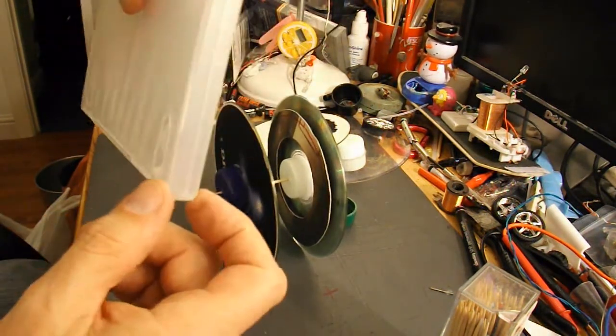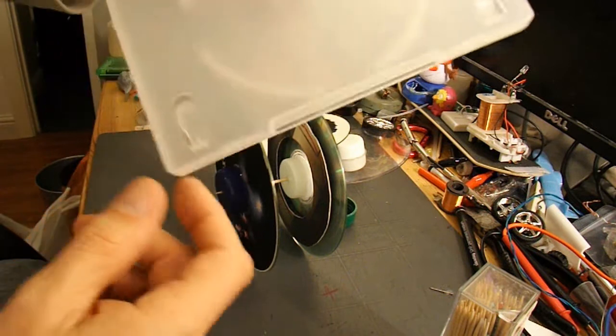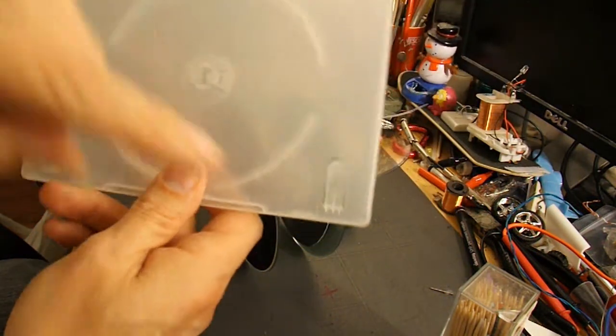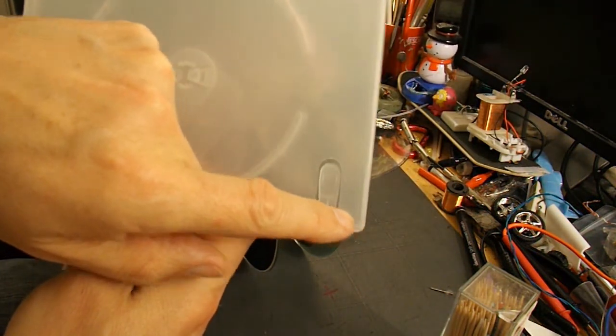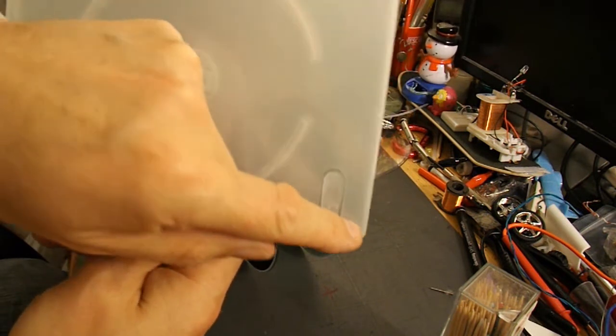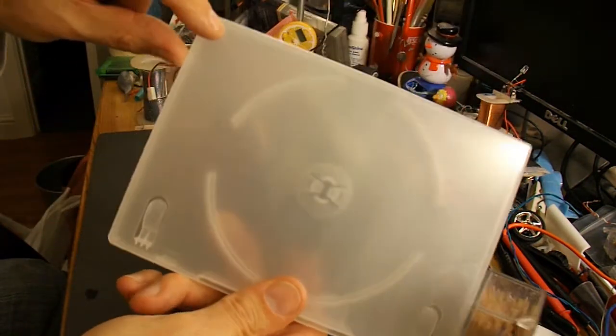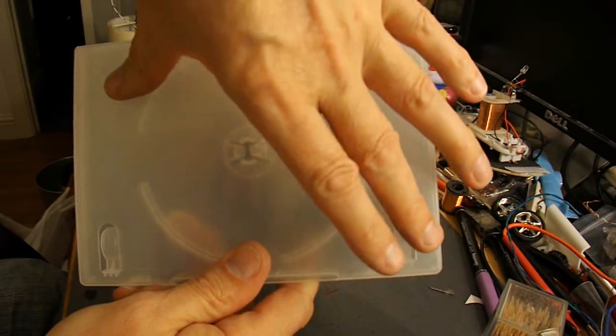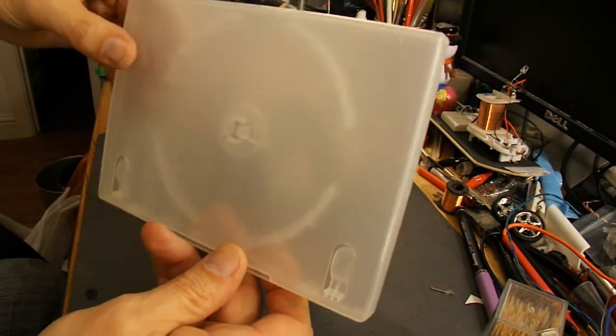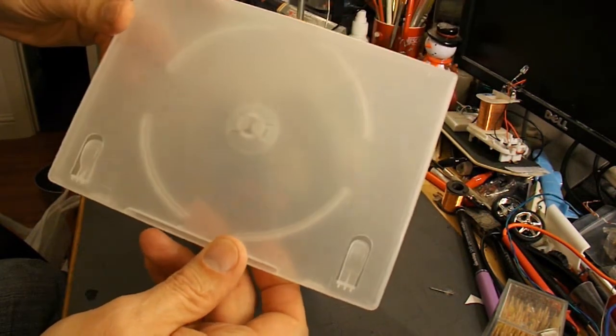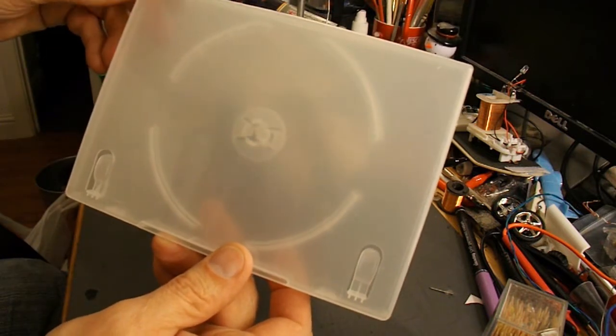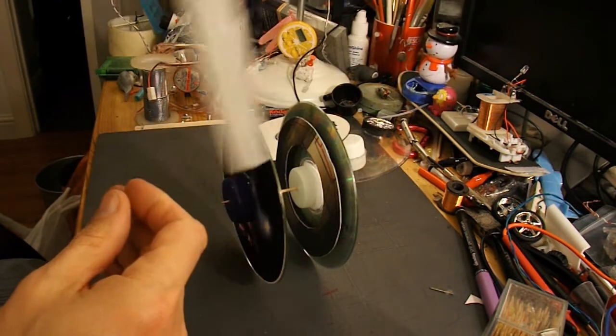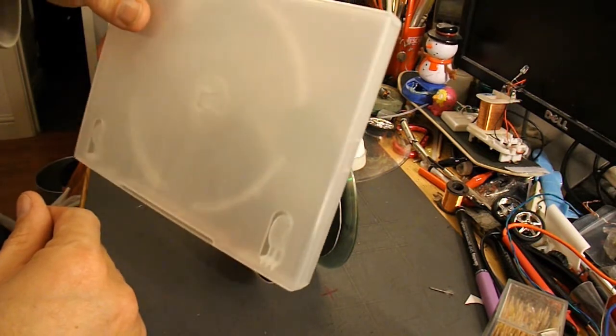So I'll melt some holes through for the axles to go through. I'll actually have the rubber band going from bottom corner to top corner just to give us the longest length of rubber band that we can fit in there, which won't be very long. I'll probably get two rubber bands in there I should think. And then we'll see how far it goes.